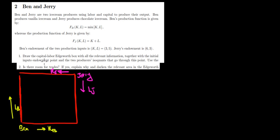Let's have a look at question two in this video. We have Ben and Jerry who produce ice cream using labor and capital. These are their production functions — one for Ben and one for Jerry.